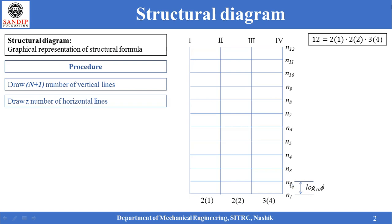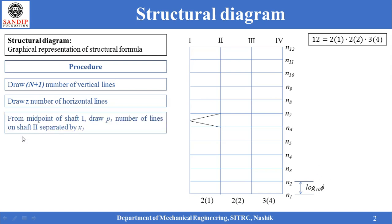This is possible only if the y-axis has a log scale. Therefore the distance between two speed steps is given by log base 10 of phi, where phi is the geometric progression ratio of a gear box. The distance between n2 and n3 will also be log base 10 of phi and so on. The next step is from the midpoint of shaft 1, draw p1 number of lines on shaft 2 separated by x1. In this structural formula p1 is equal to 2 and x1 is equal to 1, which means we have to draw two lines separated by one speed step.